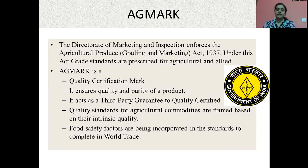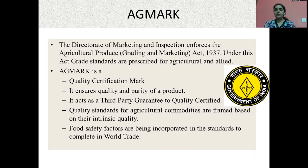The present Agmark standards cover quality guidelines of 205 different commodities, spanning a variety of pulses, cereals, essential oils, vegetable oils, fruits and vegetables, and some semi-processed foods. The term Agmark was coined by joining the words 'AG', standing for agriculture, and 'mark' as the certification mark.